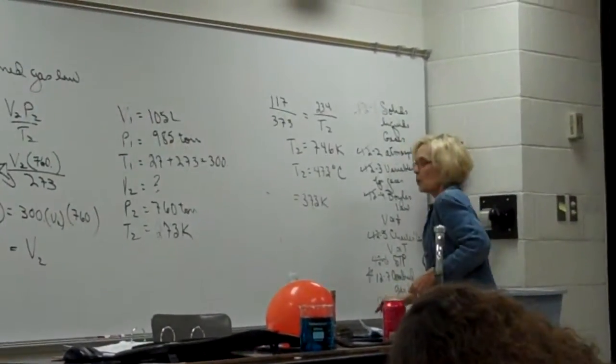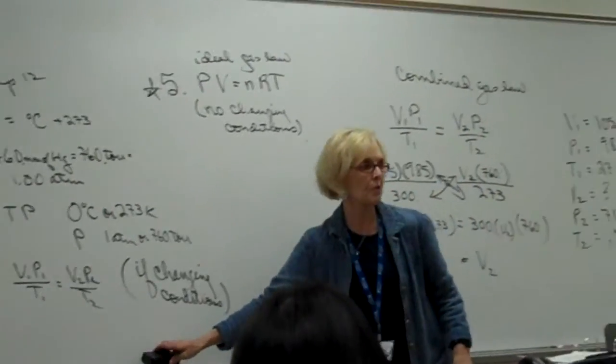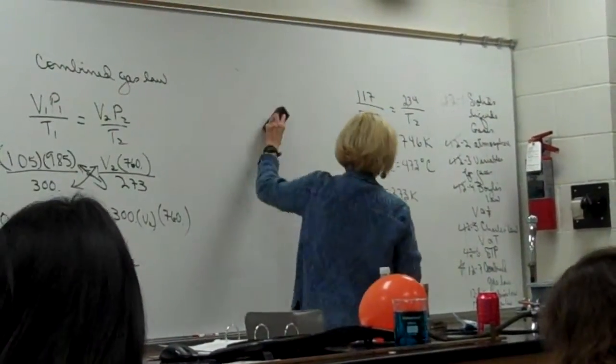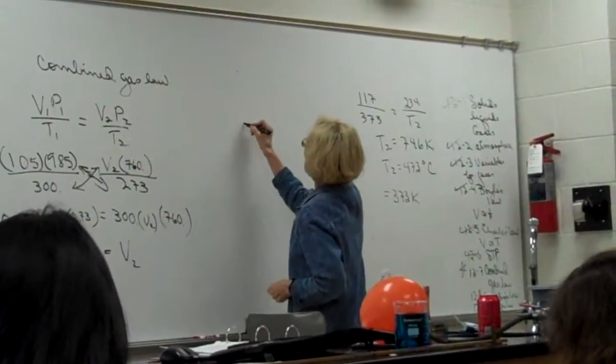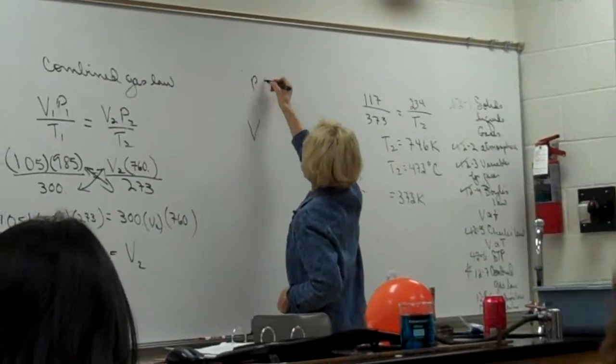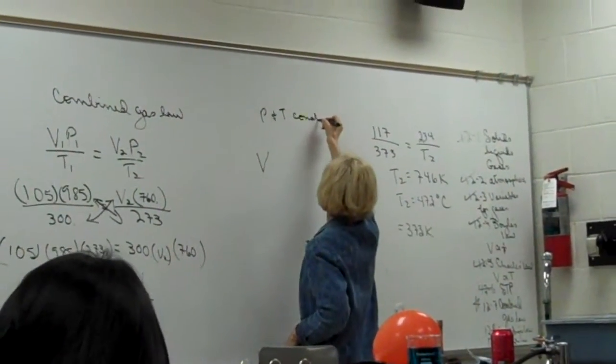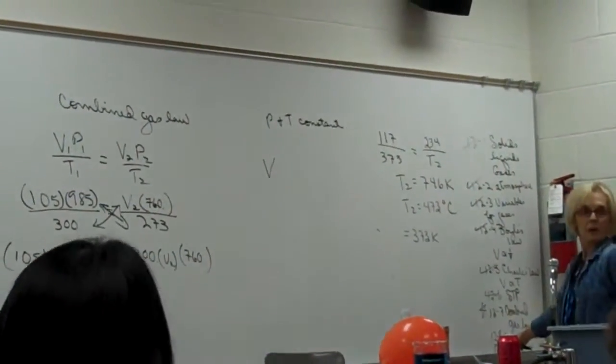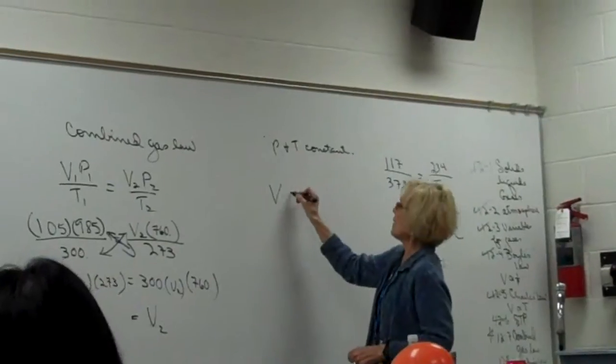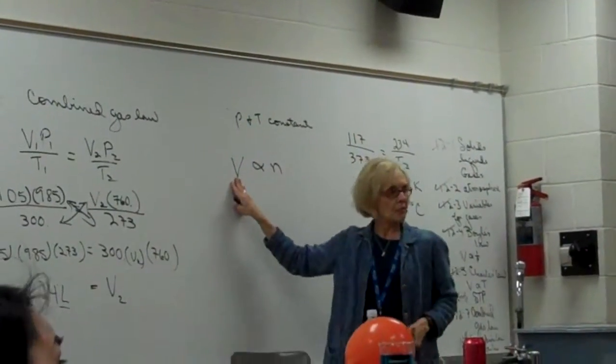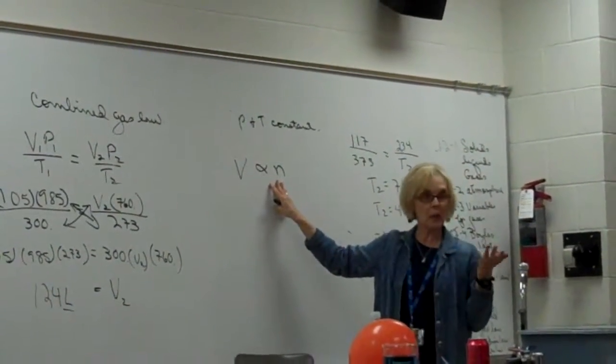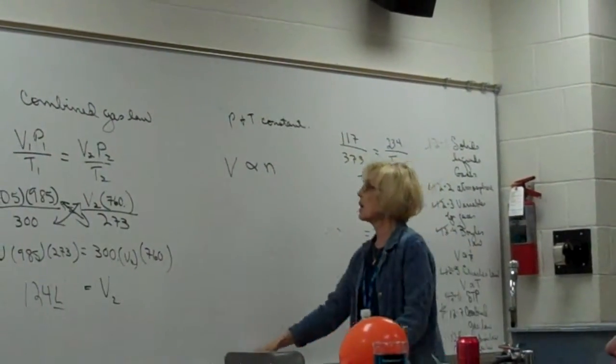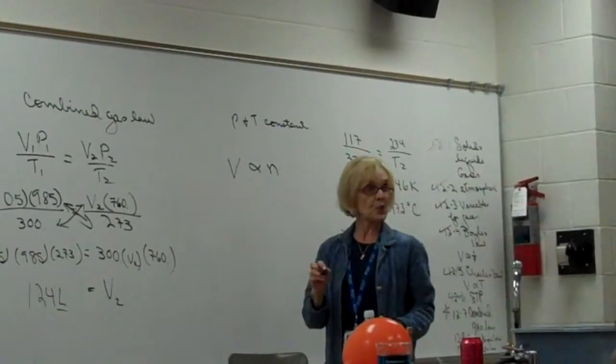Then real briefly, we won't go through a derivation. Avogadro's law, he held pressure and temperature constant. This is section 12-8. What he found is that the volume of your gas is proportional to how much gas you have. Doesn't that make sense? So if you take all the laws together...